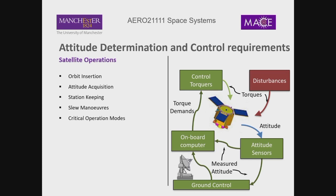You also need the ADCS to determine and acquire the attitude initially, to do station keeping during the mission to keep the satellite within its control requirements, and to perform slew maneuvers — where we change the angle of orientation of the satellite. For example, Hubble performs many slew maneuvers, pointing at one area of the sky then repointing to another. There may also be critical operation modes requiring the spacecraft to maintain pointing in a particular direction.